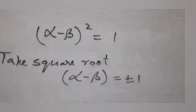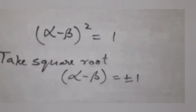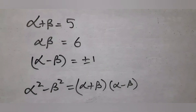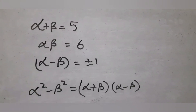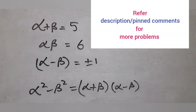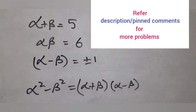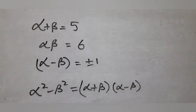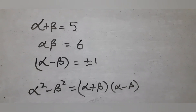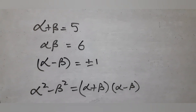Use the identity a² - b² = (a + b)(a - b). Substitute the values for α + β and α - β to find the final result.